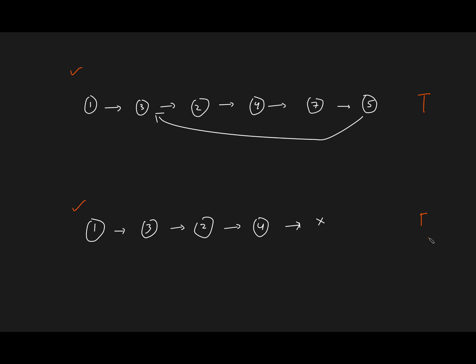The naive approach is to use hashing. You create a hash table and take a dummy node. At first you have node 1 — you check if that complete node exists in the hash table. It doesn't, so you push the complete node into it. Do not push only the value, because there can be multiple nodes with the same value. Make sure you hash the complete node.